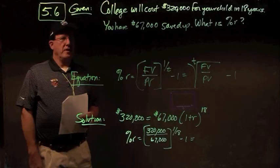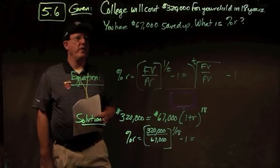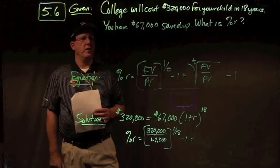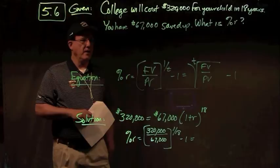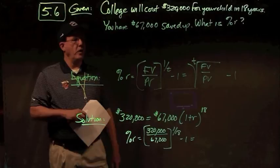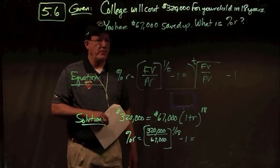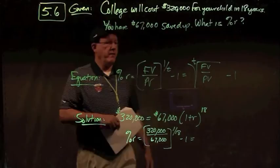Problem 5.6 — let's play 'who wants to send their child to college?' College will cost $320,000 in eighteen years when your newborn is ready. You already have $67,000 saved. What rate of return must you earn over the next eighteen years, never touching that money and letting it compound? We're solving for R: the t-th root of FV over PV, minus 1.